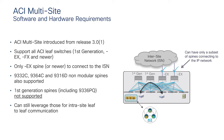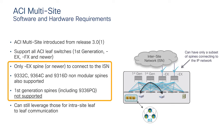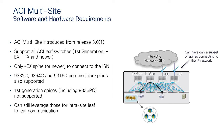There is another dependency for the spines. Spines in an ACI fabric that are part of a multisite domain need to be second generation — EX, Lankard, or newer — for modular spines, or the non-modular models 9332C, 9364C, or 9316D. First generation spines can only be used for intra-site connectivity; only second generation spines can connect to the inter-site network.